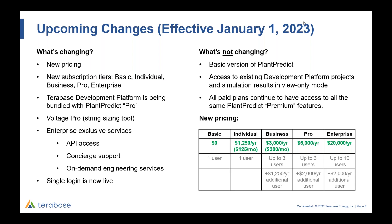We are going to be updating our pricing. Plan Predict Premium was launched a little over two years ago, and we're going to be doing a 25% increase on our base Plan Predict Premium products. From now on we'll be referring to them as Plan Predict Individual and Plan Predict Business. We're also rolling out two new tiers: our Pro tier and our Enterprise tier. The Plan Predict Pro product we're talking about today covers both the Pro and Enterprise tiers.